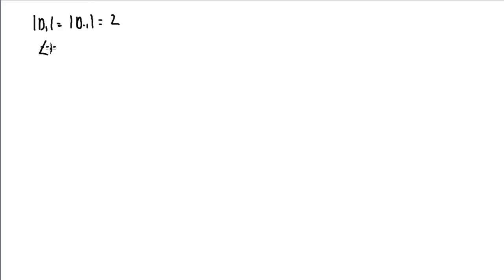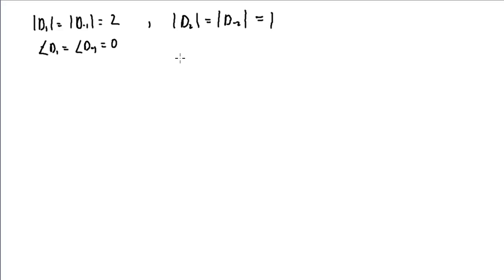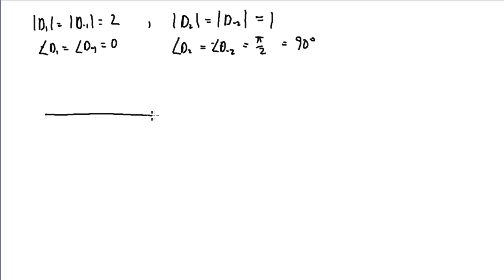In terms of magnitude and phase: the magnitude of d₁ equals the magnitude of d₋₁, both equal to 2. Since both are real, the corresponding phase angles are 0. The magnitude of d₂ equals the magnitude of d₋₂, both equal to 1. One was equal to j and the other to -j, so the angle of d₂ equals the negative angle of d₋₂. The angle of the d₂ term, which is j, is π/2, or 90 degrees.